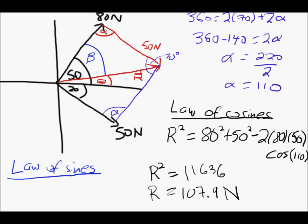So the law of sines says that the sine of an angle divided by the length of the side opposite it are always in the same proportion. So I'll write down the resultant r divided by sine of alpha. And that should be proportional to the 50 newtons divided by the sine of beta. Because those are the opposite.